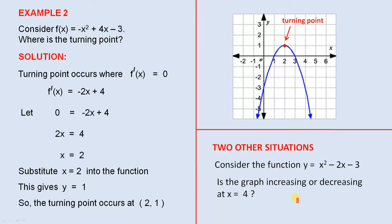Example 2. Consider f(x) = -x² + 4x - 3. Where is the turning point? The turning point occurs where f'(x) = 0.